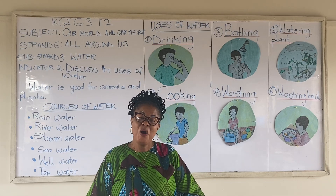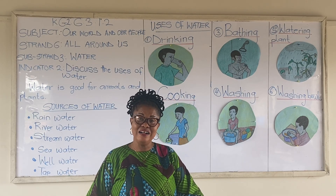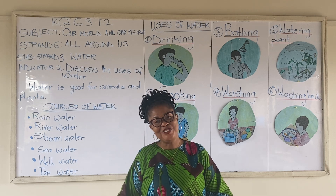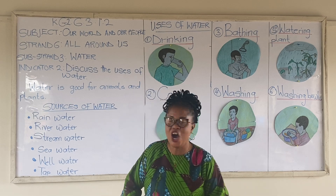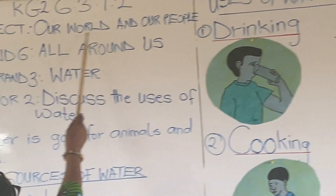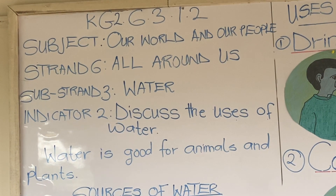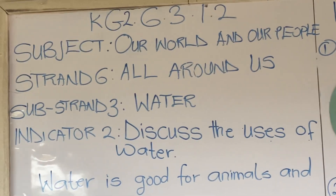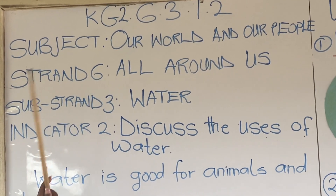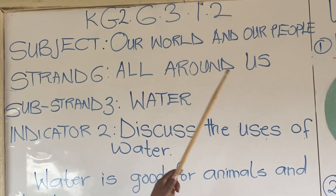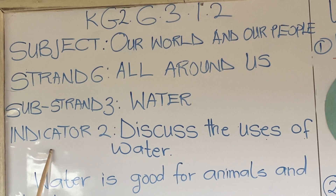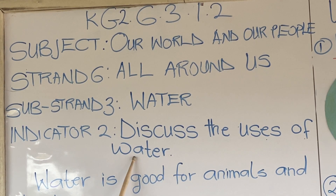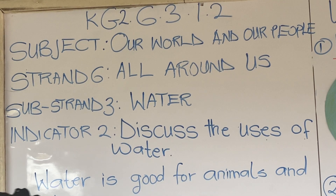Hello, welcome to Little Smiles Kindergarten 2 Online Tutorials. Today's tutorial is on our world and our people, taken from strand 6, all around us, sub-strand 3: water. Indicator 2: discuss the uses of water.